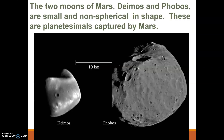Mars does have two moons: Deimos and Phobos. These are just small, non-spherical, rock-like objects — not large moons. Our own Moon is considered one of the giant moons, but these are not. They are believed to be planetesimals that were captured by the gravity of Mars.